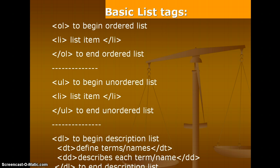There are different types of tags we are using with lists. We are using three different types: ordered list, unordered list, and description list. For the ordered list, we use the ol tag, then we list items with the help of the li tag, starting with the opening li tag and ending with the closing li tag.